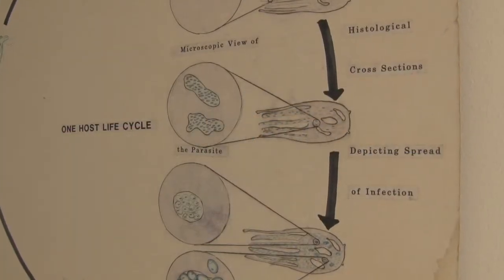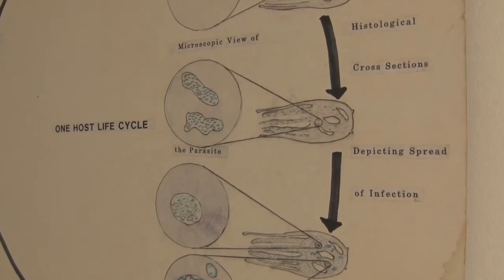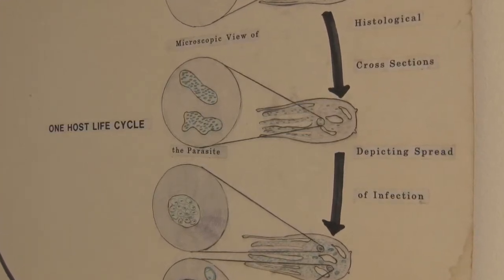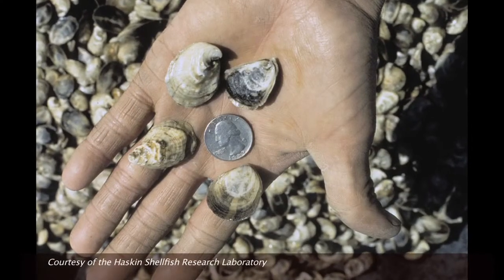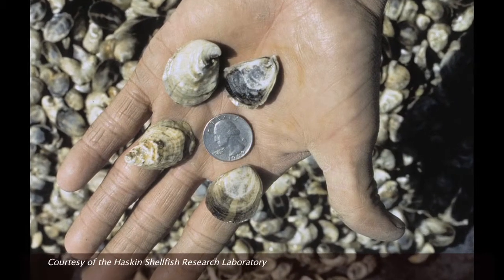For example, the oysters have two very important diseases. Each of these diseases can cause heavy mortalities in oysters. We are trying to breed a disease-resistant oyster so that farmers can have better survival and better returns.